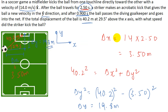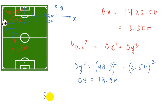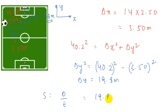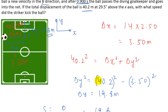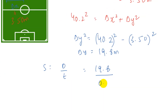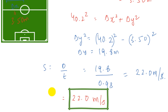Now, speed equals distance over time. The distance traveled by the ball in the y-direction is delta-y = 19.8 meters, and the time to reach the net is 0.9 seconds. So the striker's kick speed equals 19.8 / 0.9 = 22.0 meters per second in the y-direction. Therefore, the striker kicked the ball at 22.0 meters per second.